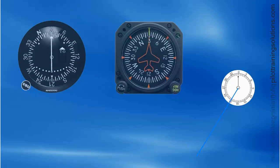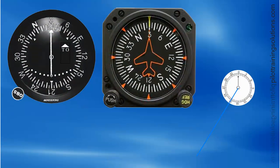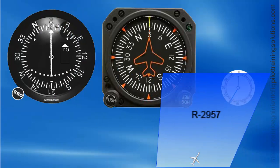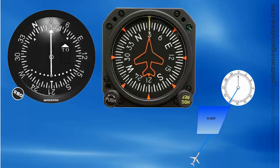Let's say that you are on the 210 radial from a VOR and are tracking to it on a 030 heading. For this video, let's just say that the winds are negligible. Here comes ATC advising you of an active restricted area that stands between you and the VOR.